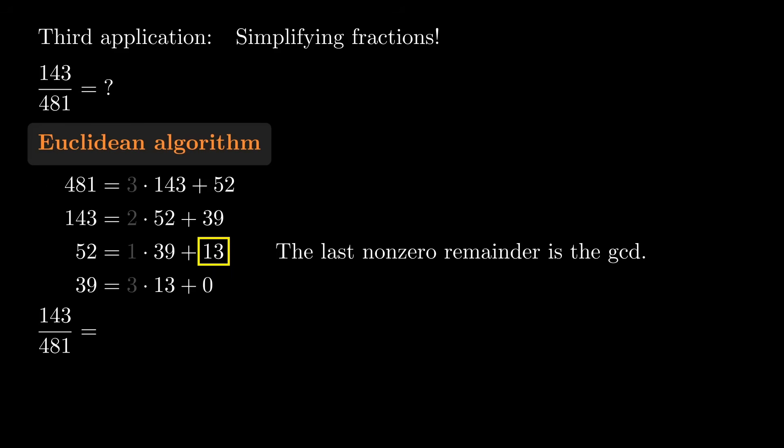So how does 143 over 481 simplify? Divide the numerator and denominator by 13, and we get 11 over 37. Great!